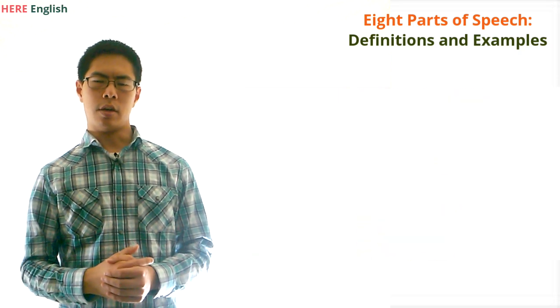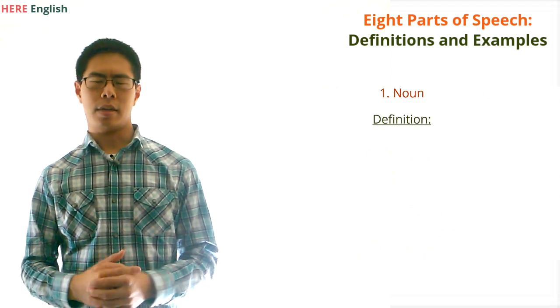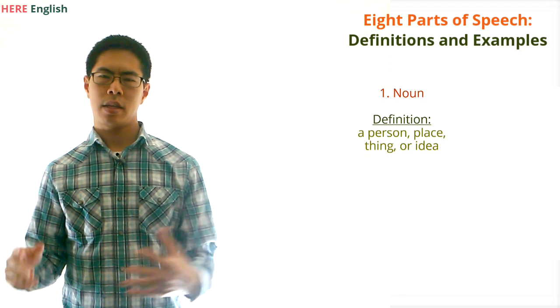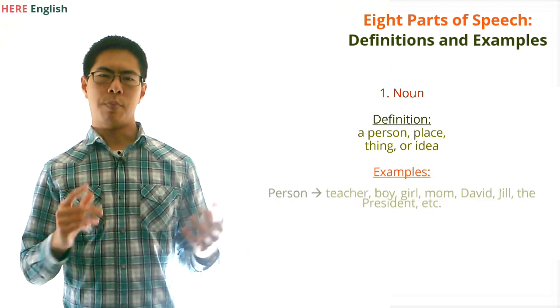Now, let's start with noun. What is a noun? A noun is basically a person, place, thing, or idea. Here are some examples. A person might be a teacher, a boy,